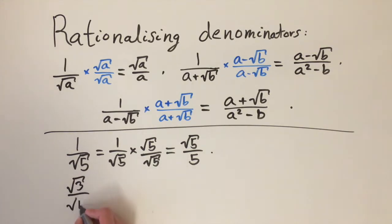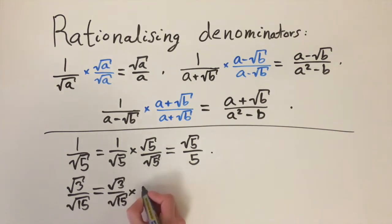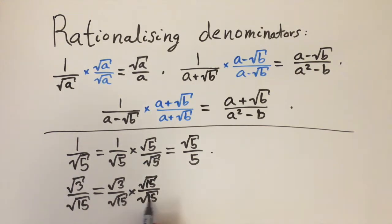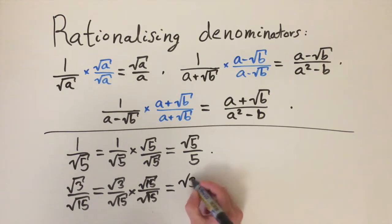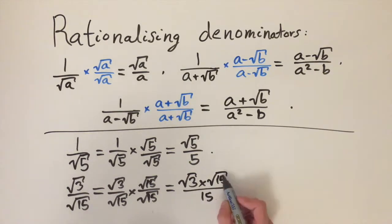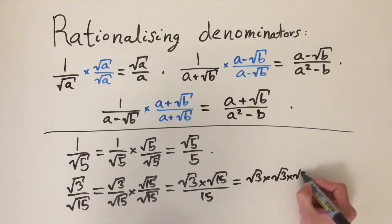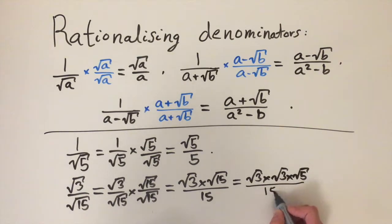Let's do another example: the square root of 3 divided by the square root of 15. Now we have an irrational part on the numerator as well. Just as before, we multiply top and bottom by the denominator — the square root of 15 divided by the square root of 15. The square roots on the bottom cancel out, and we get the square root of 3 times the square root of 15 on top, and 15 on the bottom. We can simplify: the square root of 15 is the square root of 3 times the square root of 5.